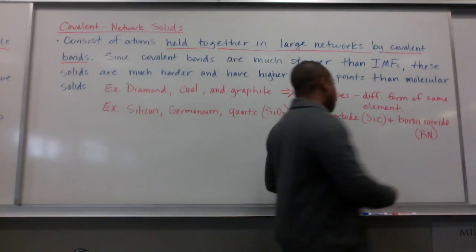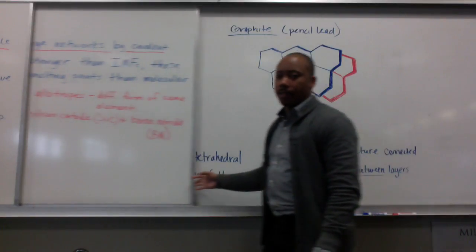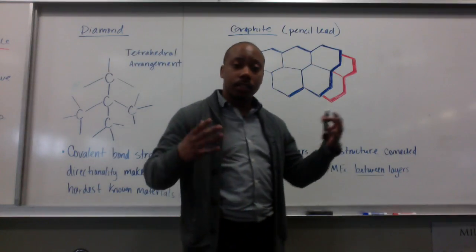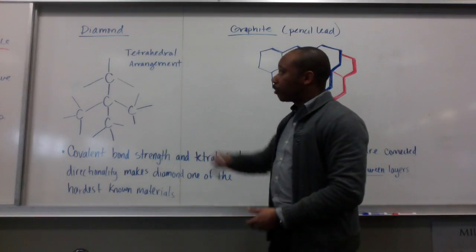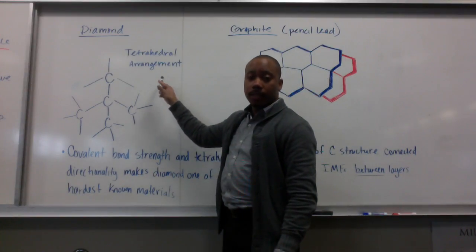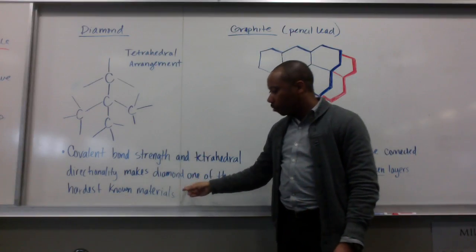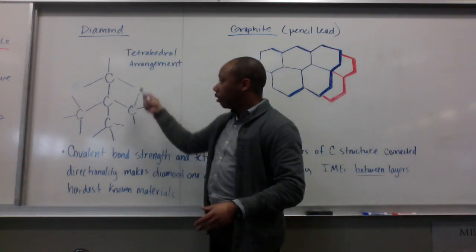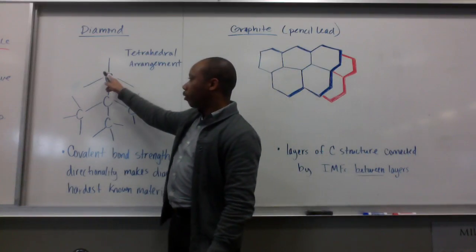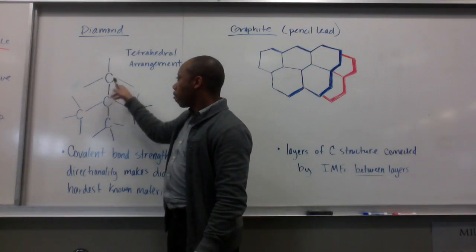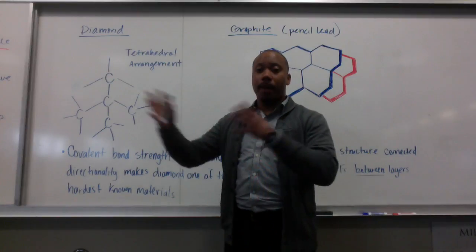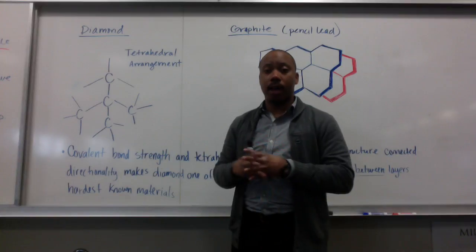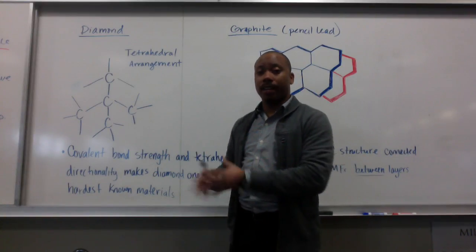Let's look at diamond and graphite structurally. Diamond, one of the hardest substances known to man, has a tetrahedral arrangement, and it's this arrangement that makes it so tough and hard. There is a tetrahedral central carbon with four electron bond density domains coming off it, and this network keeps on going, making a nice solid network — that's what makes diamond so hard.